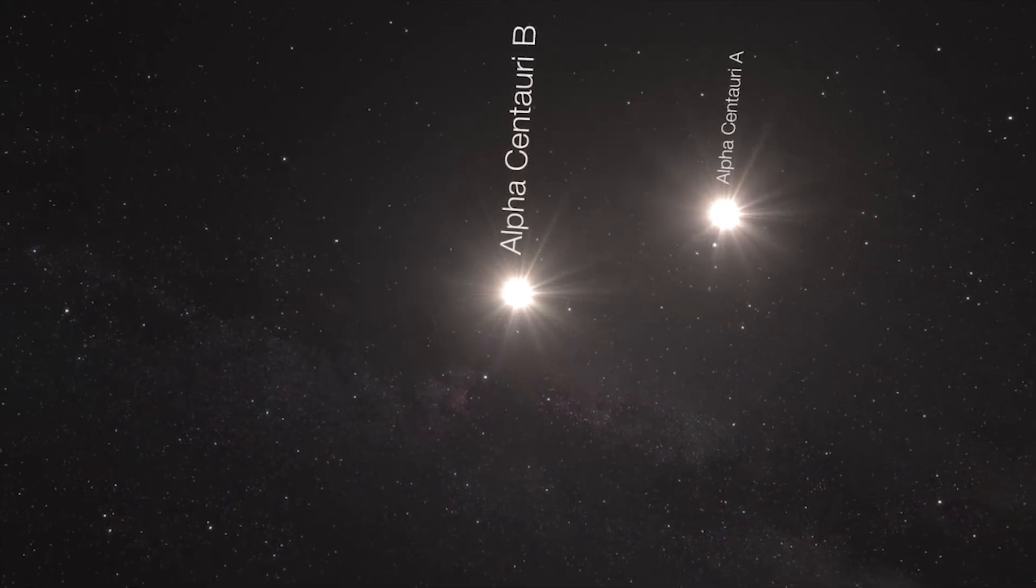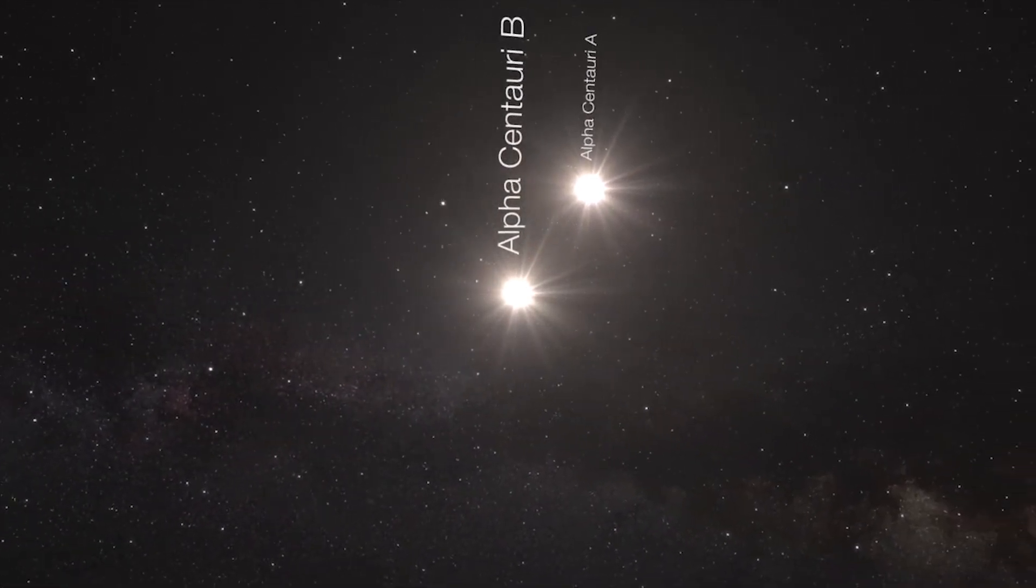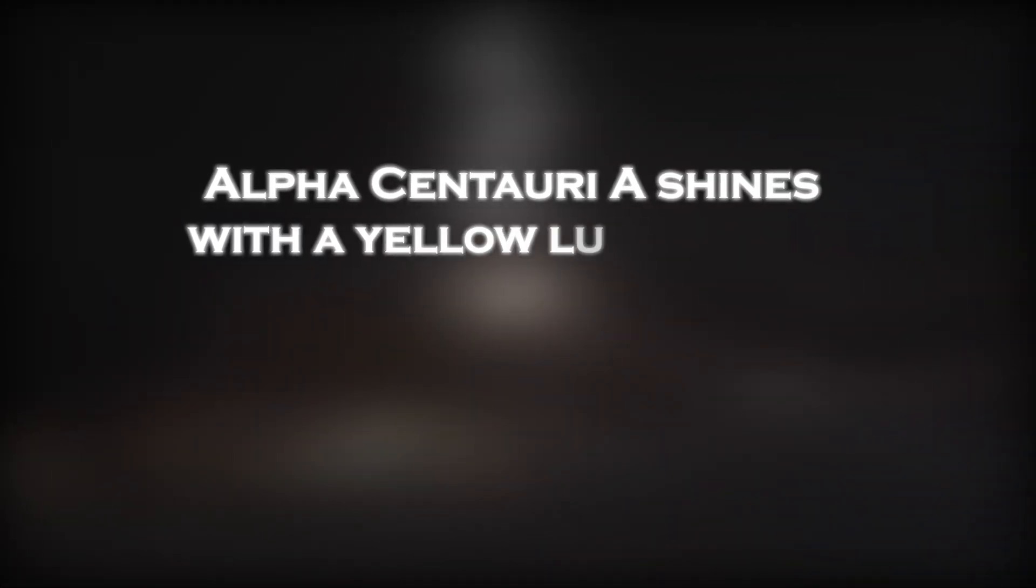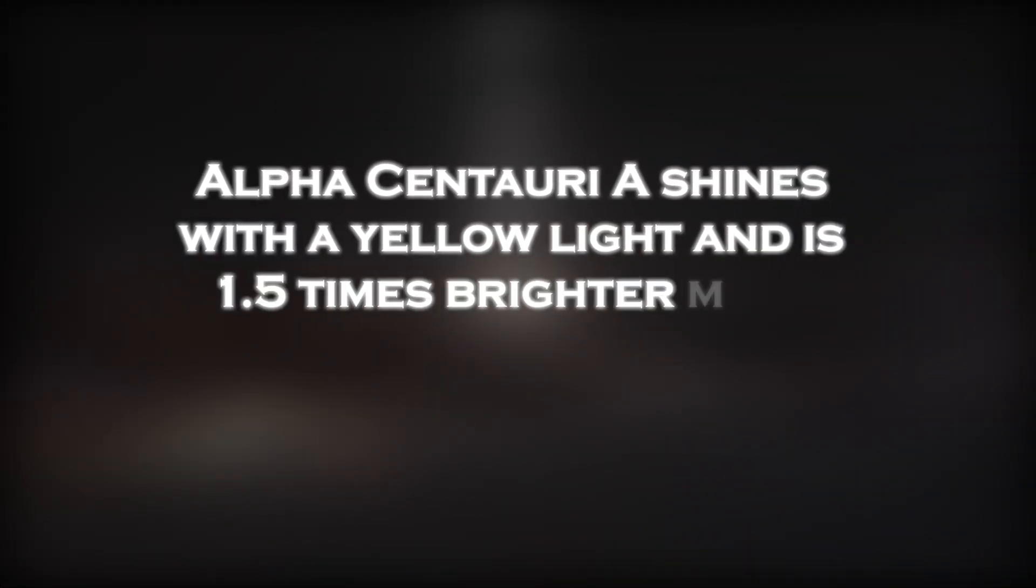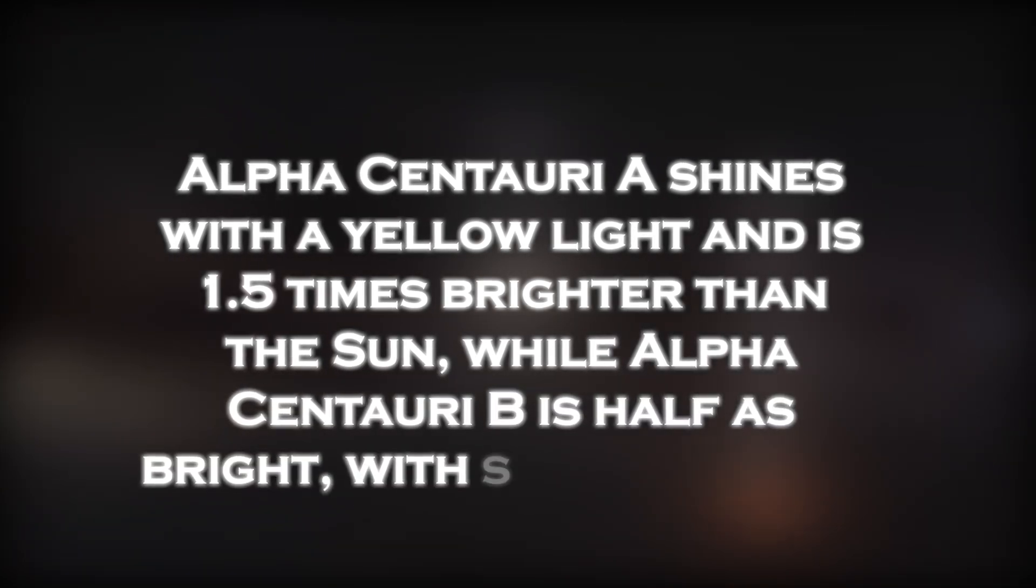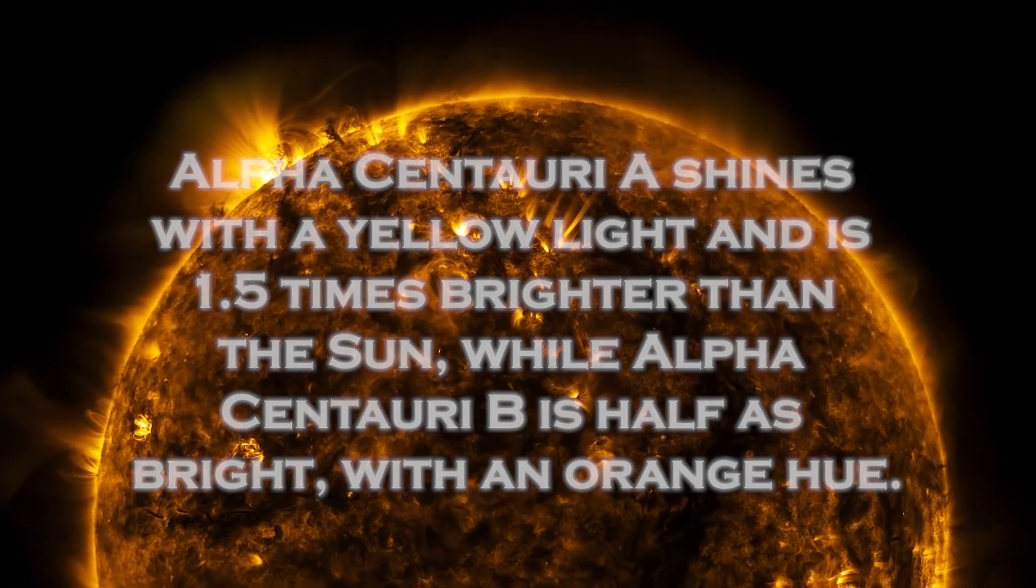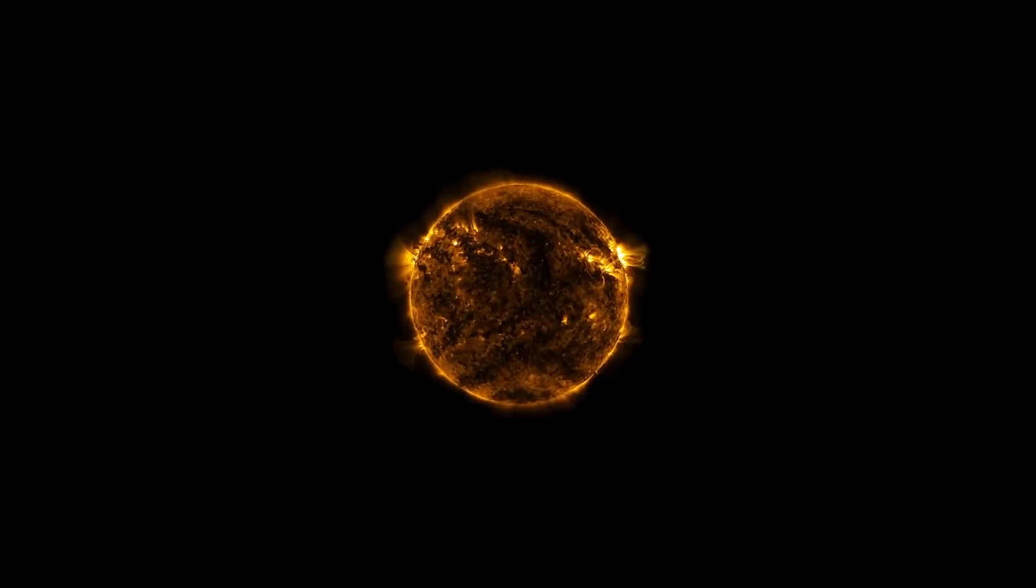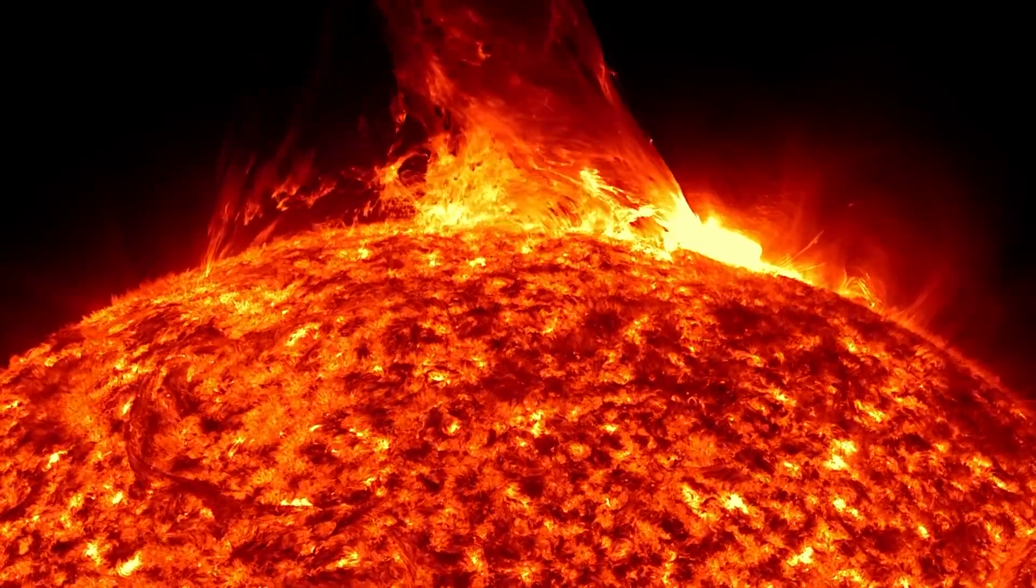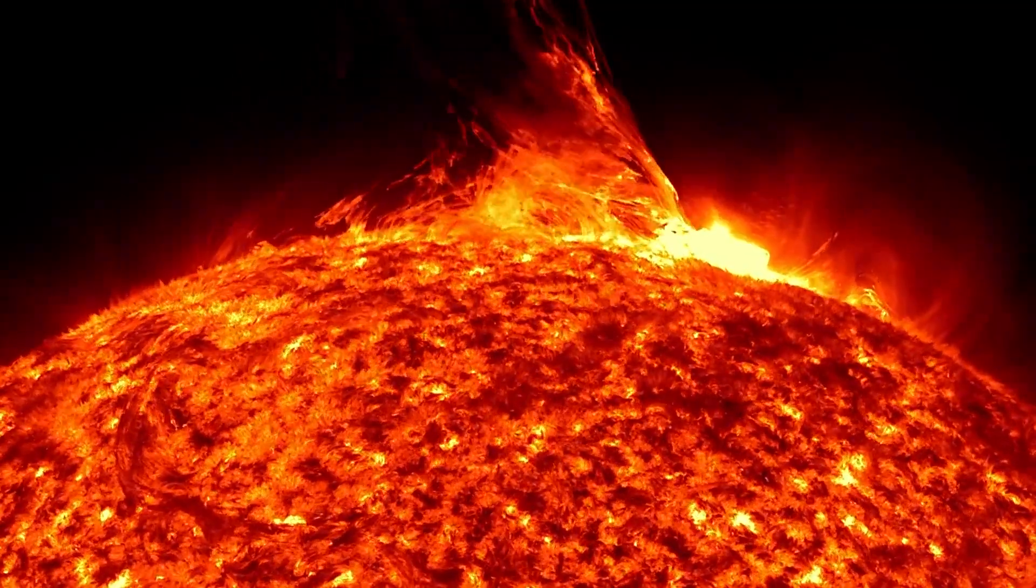Alpha Centauri A and B, the two stellar companions, are relatively close to each other and are quite similar to the Sun. Alpha Centauri A shines with a yellow light and is 1.5 times brighter than the Sun, while Alpha Centauri B is half as bright with an orange hue. Alpha Centauri A is slightly larger than our Sun, Alpha Centauri B is also smaller, so our Sun fits exactly between them in size.